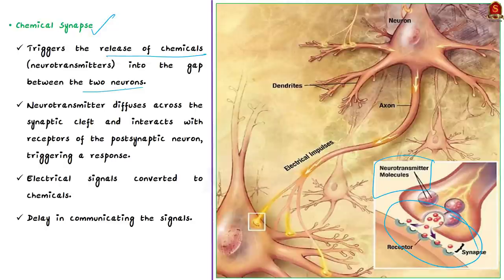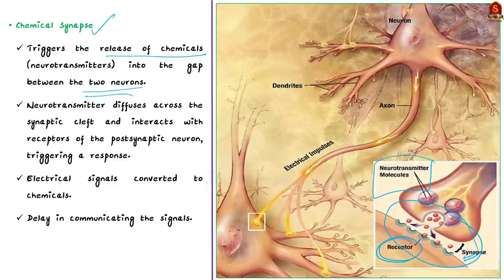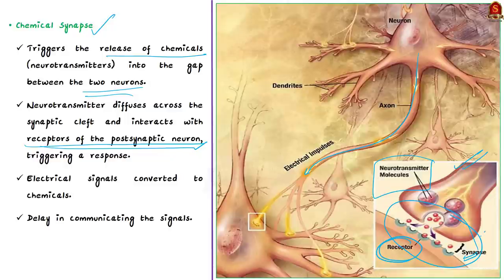The presynaptic neuron releases neurotransmitters, which diffuse across the synaptic cleft and interact with receptors on the membranes of the postsynaptic neuron. Receptors are present in the dendrite of each neuron. So the neurotransmitter is released by the presynaptic axon and received by the receptor in the postsynaptic neuron. In a chemical synapse, electrical signals are converted to chemical signals, causing a delay in communication. In mammals, the majority of synapses are chemical.